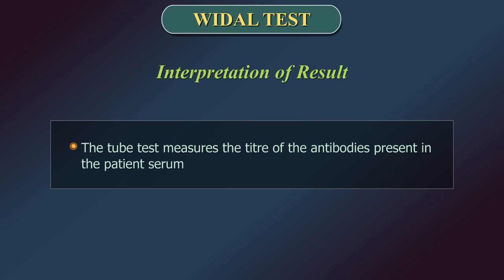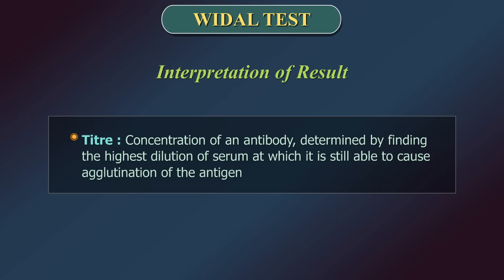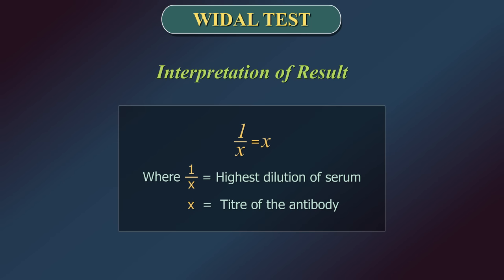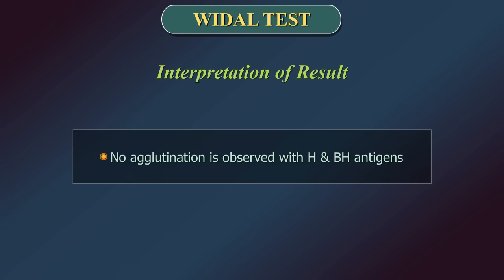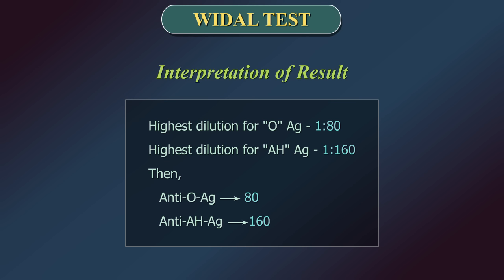The tube test measures the titer of antibodies present in patient serum. Titer is defined as the concentration of an antibody determined by finding the highest dilution of serum at which it is still able to cause agglutination of the antigen; if the highest dilution is 1:X, the titer is reported as X. In this test sample, the highest dilution showing agglutination is 1:80 for O antigen and 1:160 for AH antigen. No agglutination is observed with H and BH antigens. Hence, the patient suffers from Salmonella paratyphi A infection with anti-O antibody titer of 80 and anti-AH antibody titer of 160.